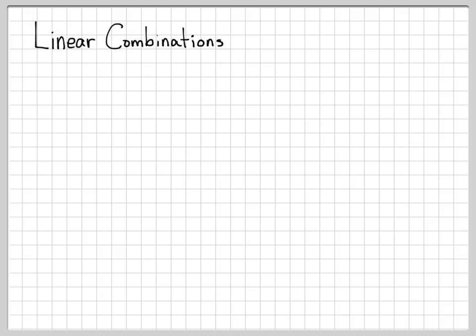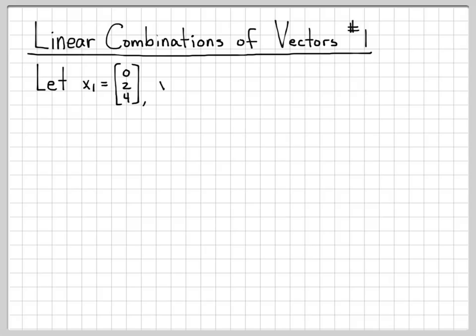Let's work a problem dealing with linear combinations of vectors. In this first example, we're going to work with the vectors x1, x2, and x3. Each of these vectors is a length three vector.